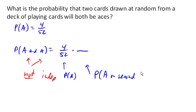given, and we use this little bar for a given, given an ace on the first draw. And this is what's called a conditional probability.